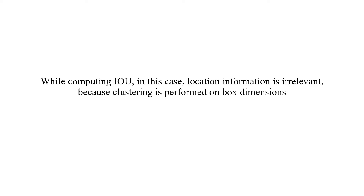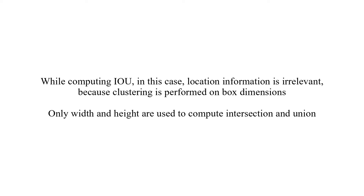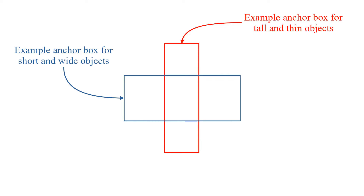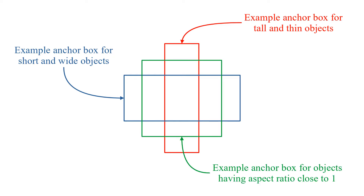While computing intersection over union in this case, location information is irrelevant because clustering is performed on box dimensions — only width and height are used to compute intersection and union. This is an example anchor box for tall and thin objects. This one is for short and wide objects. And this one is for objects having an aspect ratio close to 1.